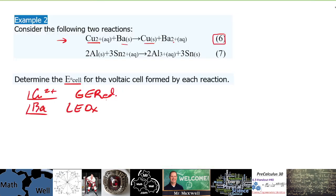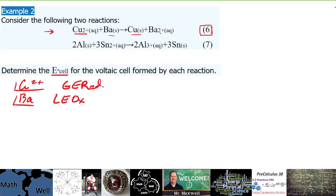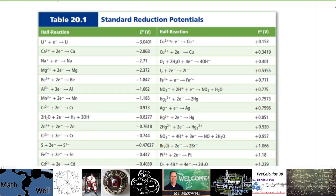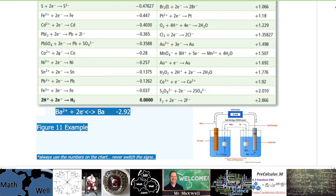So whichever one is further down the list as we go from top to bottom, that's the one you start with. So it looks like the reduction one is copper. Here's copper and here's the number for copper.